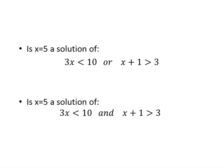Here's a simple example. Is x equals 5 a solution of the compound inequality: 3x is less than 10, or x plus 1 is greater than 3? Notice it is two simple inequalities combined with the word 'or'. Since it's combined with 'or', we must satisfy at least one condition to have a solution.